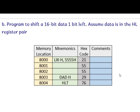The second program is: write a program to shift a 16-bit data 1 bit left. Assume the data is in the HL register pair. So we have to perform a 16-bit left shift, and the data is stored in the HL register pair. What is the trick here?